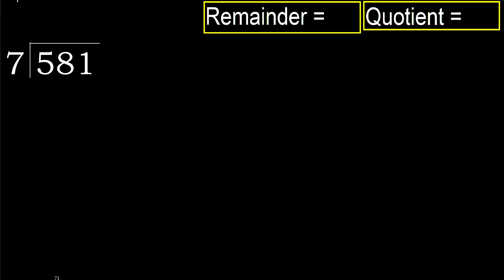581 divided by 7. 5 is less, therefore next. 58 is not less, therefore work with 58. 7 multiplied by which number is nearest to 58, but not greater?